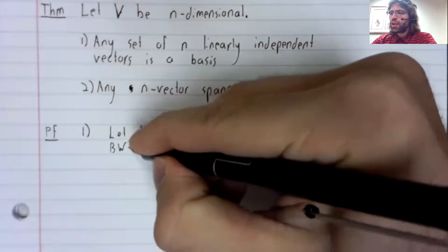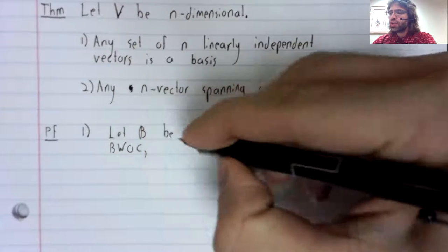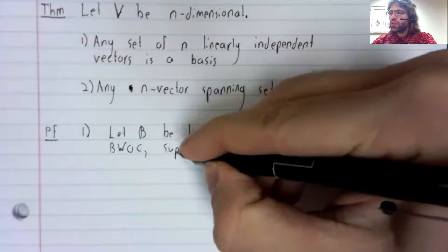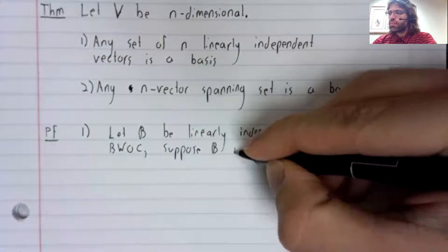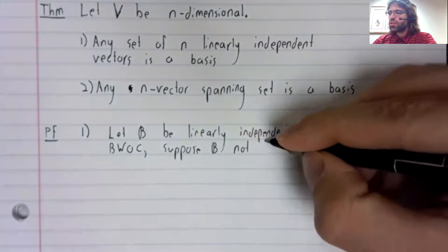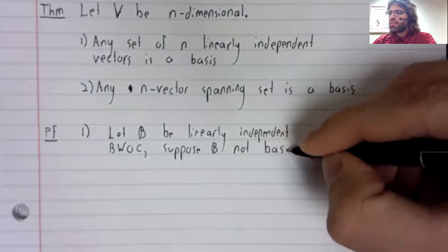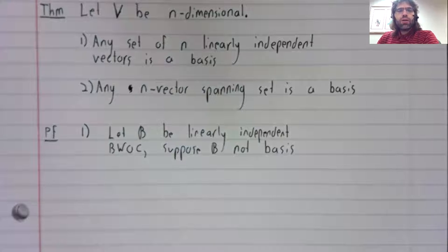By way of contradiction, suppose B is not a basis.